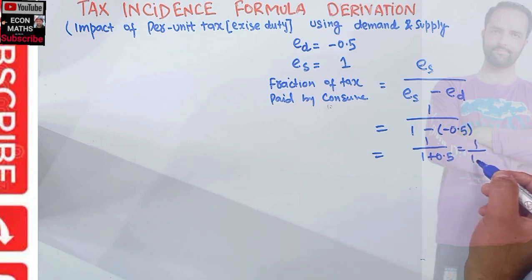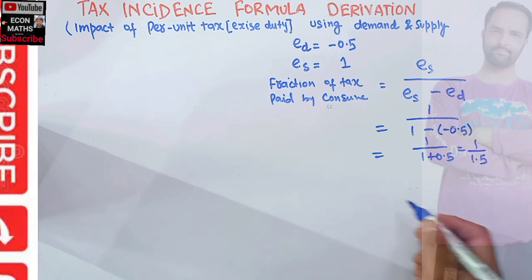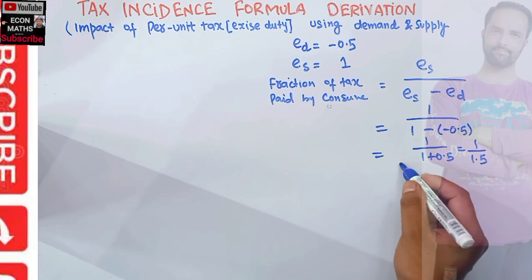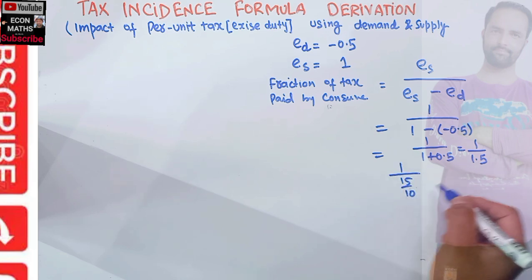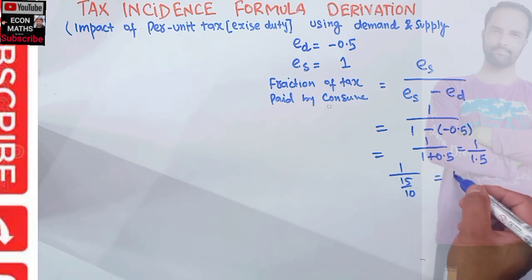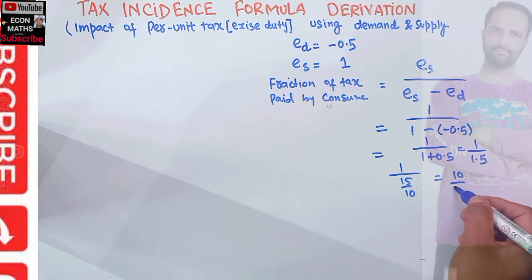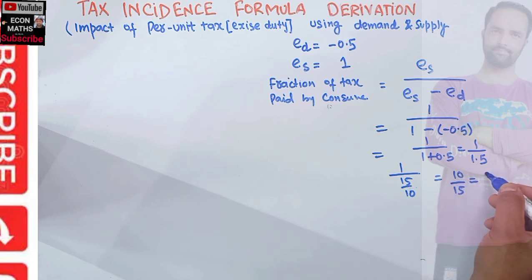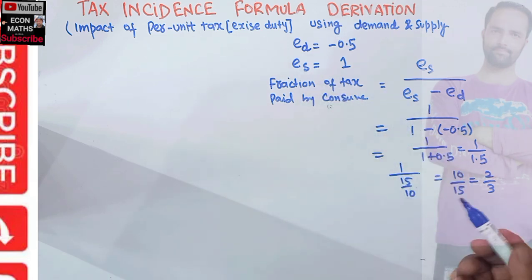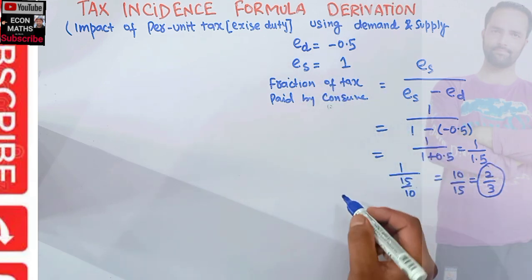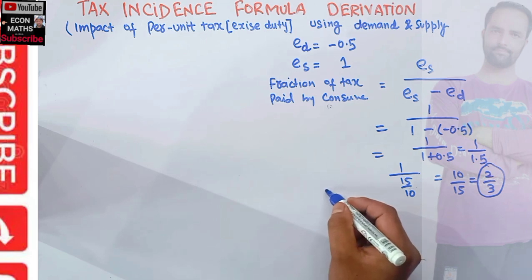That gives us 1 divided by 1.5, which we can write as 10/15, and reciprocating gives 10/15 = 2/3. So the fraction of tax paid by consumers equals two-thirds.